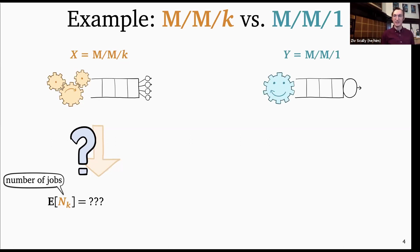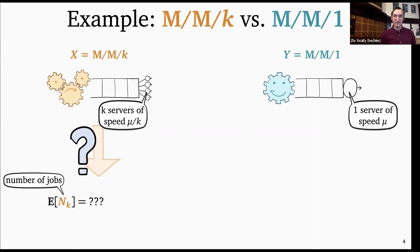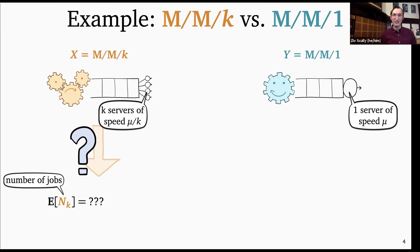Specifically, I'm going to compare the M/M/K to an M/M/1 with the same total service capacity. On the left I have K servers each of speed mu over K, and on the right my single server has speed mu. Both systems are similar in the sense that they have the same total service capacity. But the M/M/1 is obviously easier because we don't have to worry about whether all the servers are full or only some of them are busy.